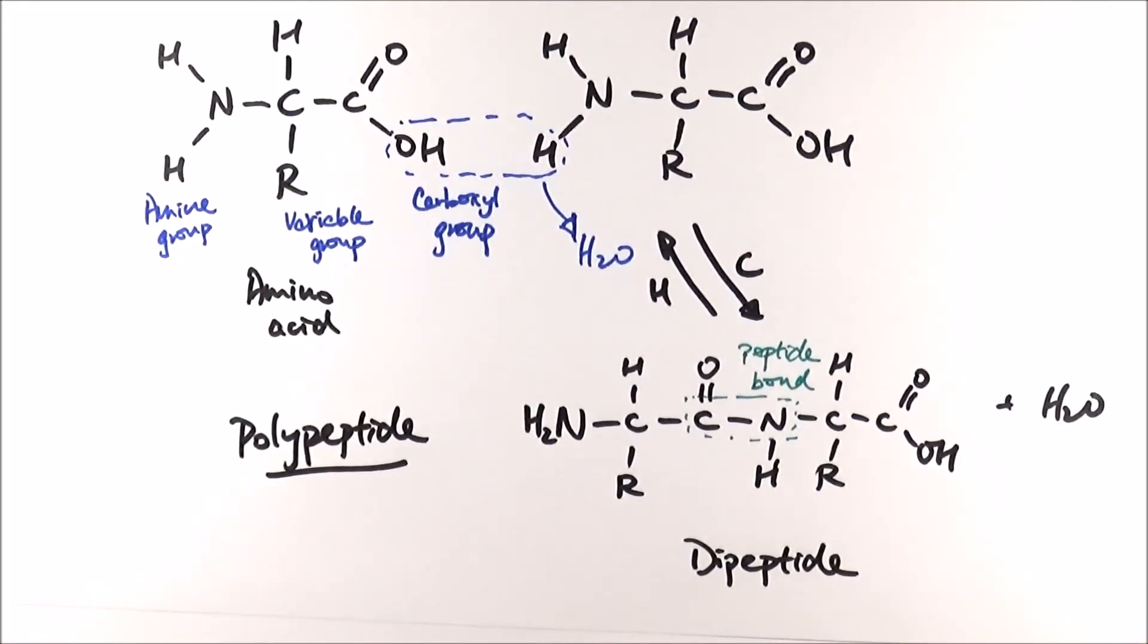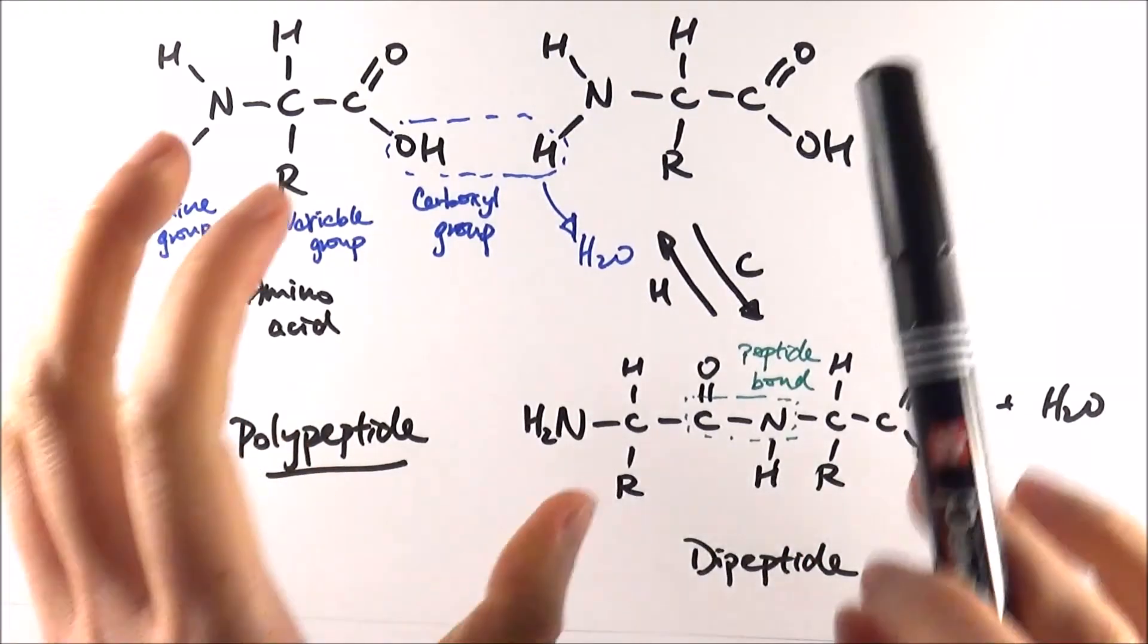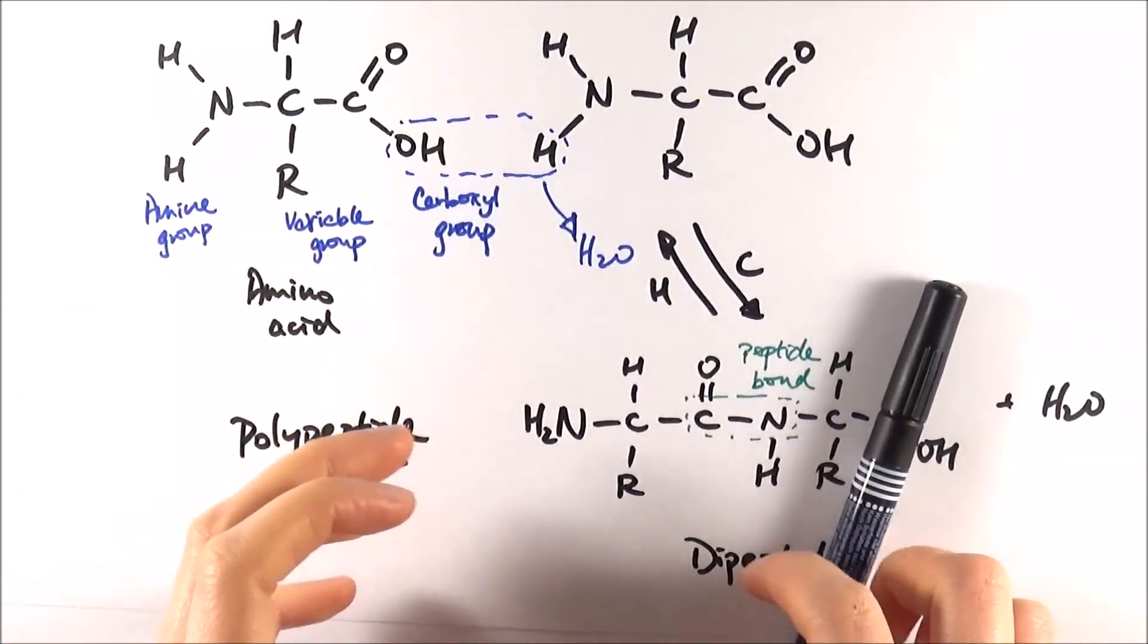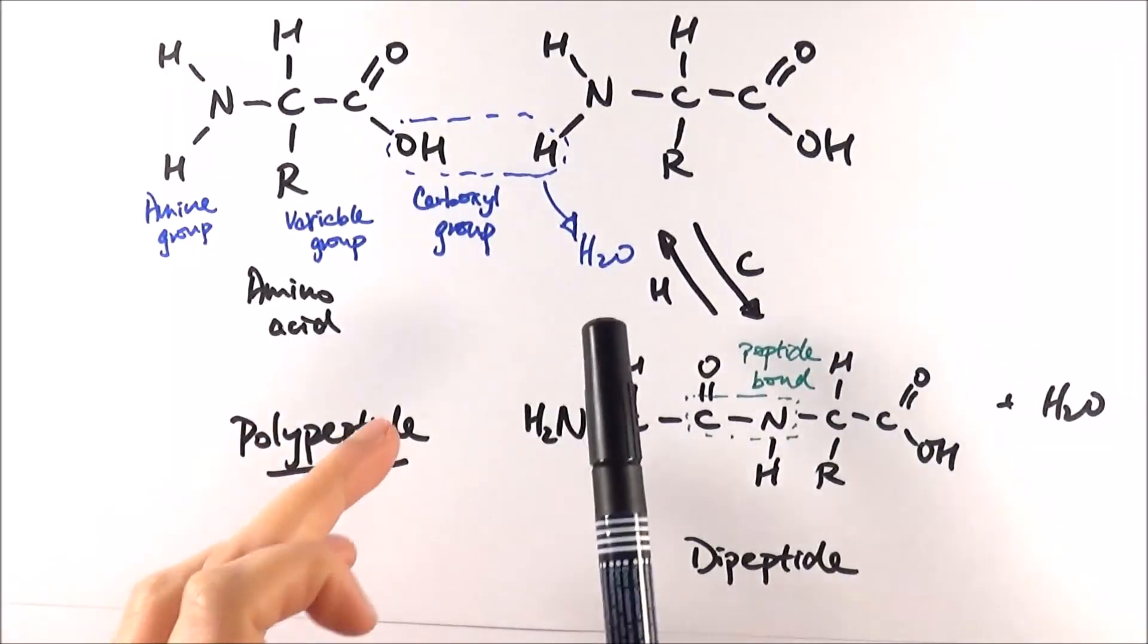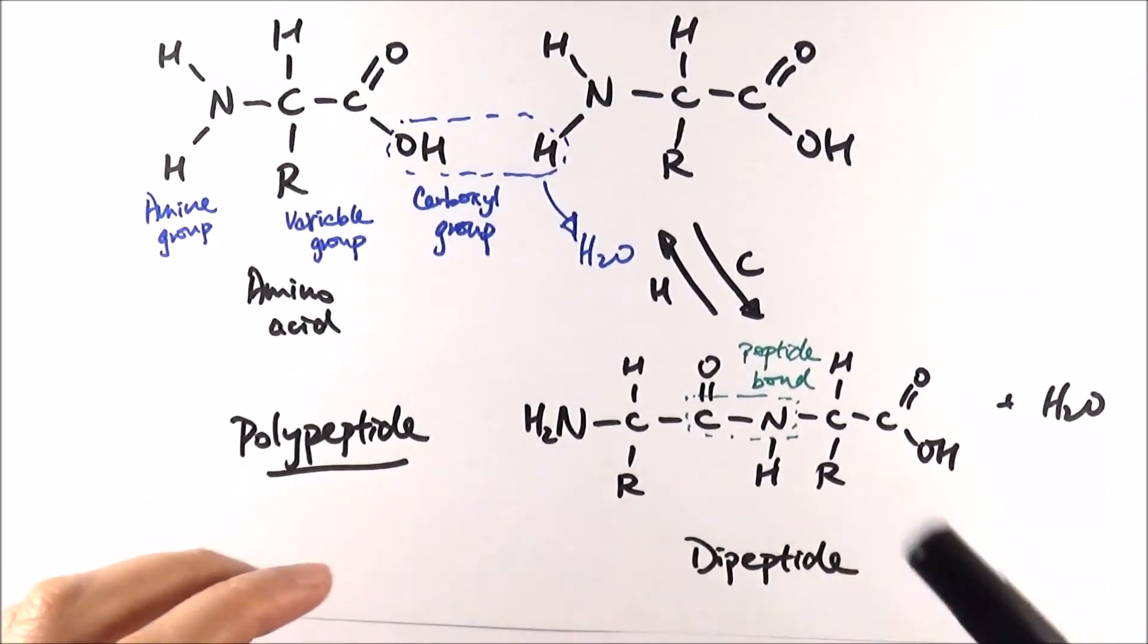Many proteins are joined up by other parts, prosthetic groups like non-protein groups, to make up a functioning protein. For example, hemoglobin is made up of four different subunits of polypeptide, and in each of these polypeptide subunits, they contain a heme group. All together is what we call a protein.